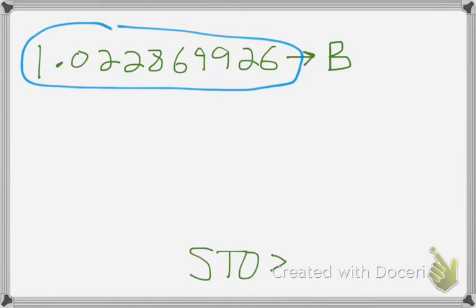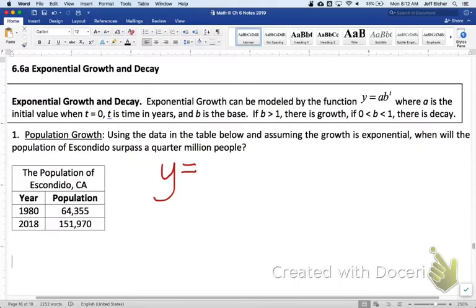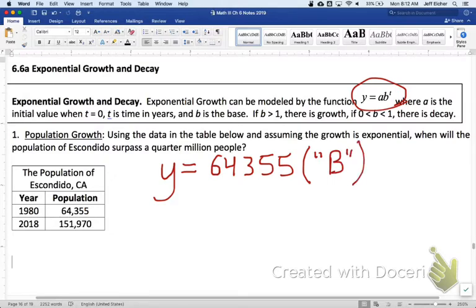So, now that we've found b, we can write our general formula, y equals, the a value is still the a value, that's still our initial population. b, and I will put in quotes capital B because I stored it in my calculator, raised to the t. And again, that b that I had stored in my calculator is this value that keeps going.